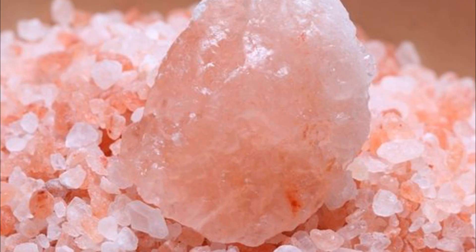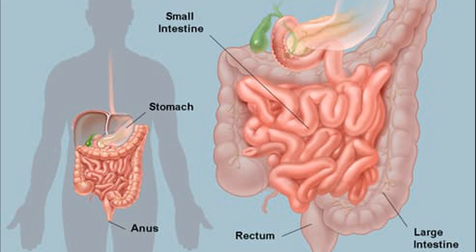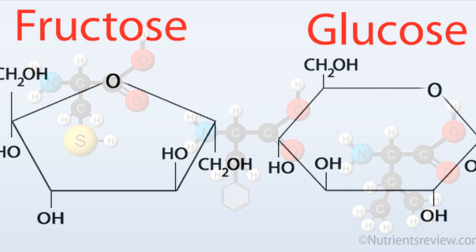Simple sugars like glucose, fructose, and galactose, and amino acids — which are the end products of protein digestion — are absorbed in the ileum.